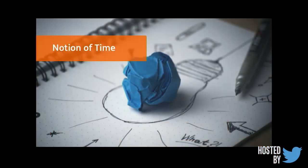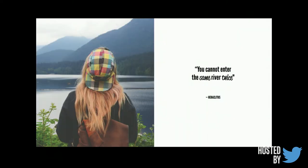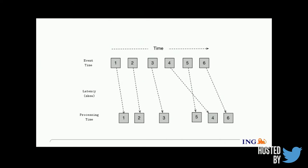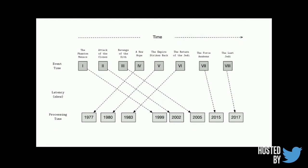Before explaining sliding windows, I want to discuss the notion of time in stream processors. There are two kinds of time: event time, which refers to when the event is actually happening, and processing time, which refers to the local clock on the machine when the operator is executing. A popular example that distinguishes these is the Star Wars analogy: The Phantom Menace was first in the series but was released in 1999, whereas A New Hope was the fourth in the series but was processed in 1977. This means that streaming systems need to deal with out-of-orderness to some extent.